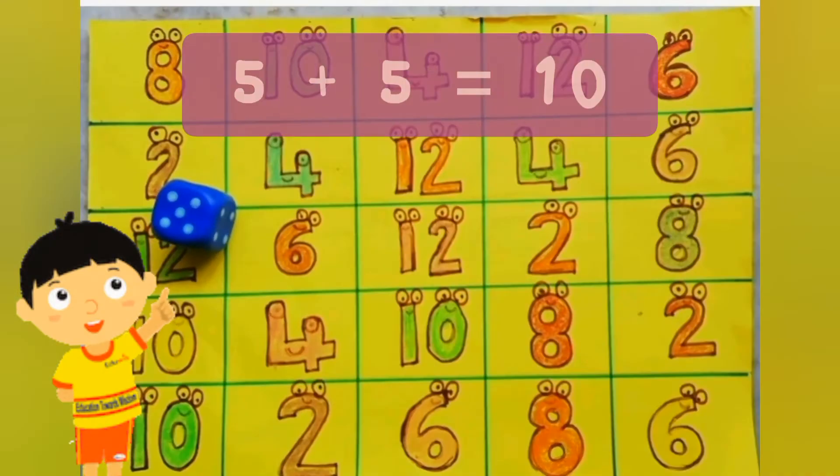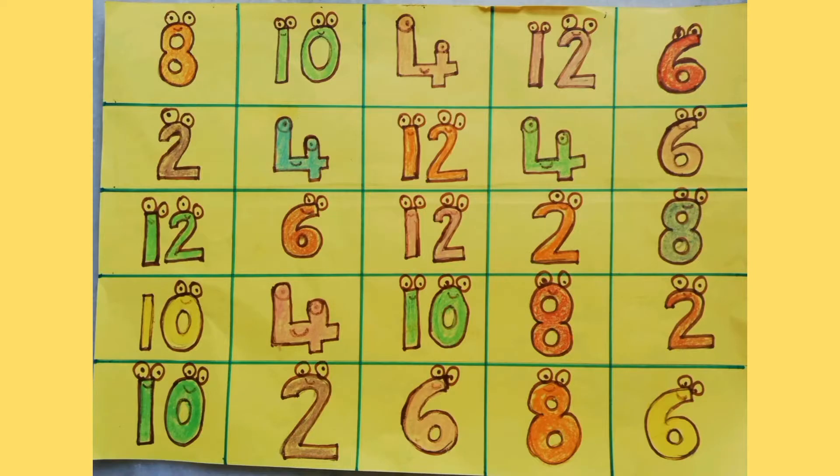It's five. I know double of five is ten. I shall now mark all the tens that I see on the board.